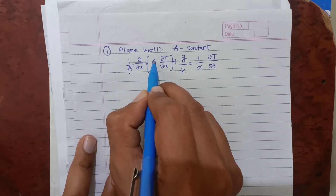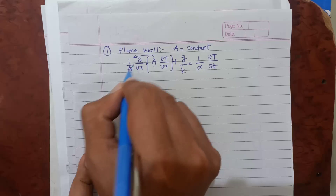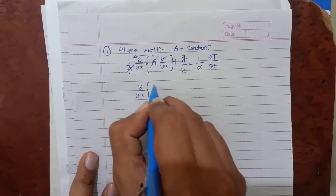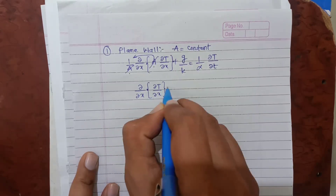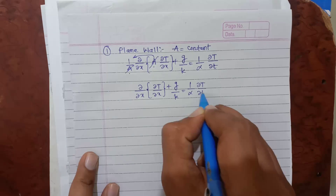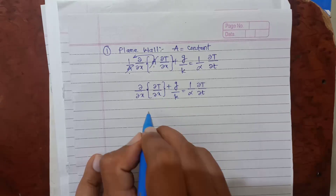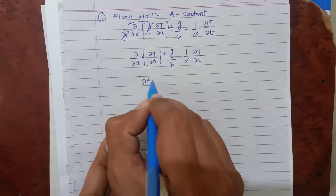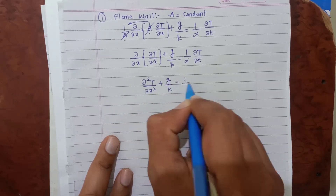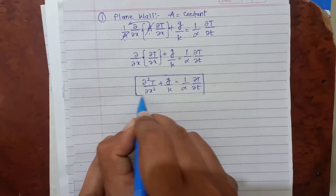Because A is constant both inside and outside the bracket, these two A's cancel each other. What we get is: ∂/∂x(∂T/∂x) + g/k = 1/α · ∂T/∂t. This is a differentiation of a differentiation, so finally the governing heat conduction equation for a plane wall becomes: ∂²T/∂x² + g/k = 1/α · ∂T/∂t.